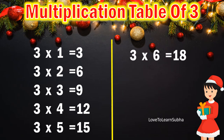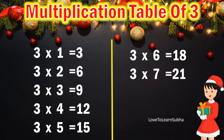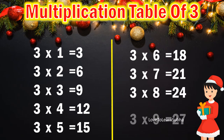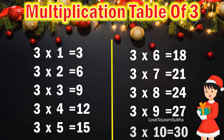3 6s are 18, 3 7s are 21, 3 8s are 24, 3 9s are 27, 3 10s are 30.